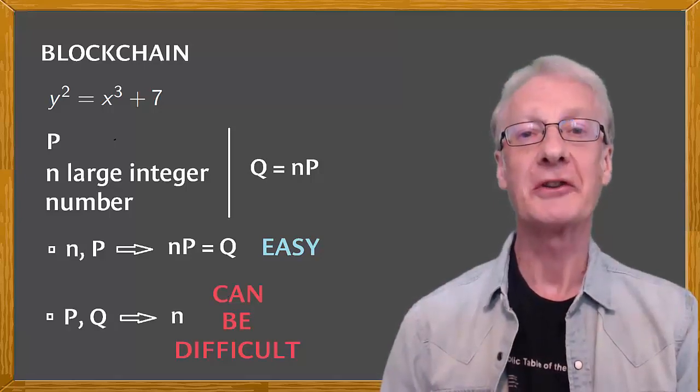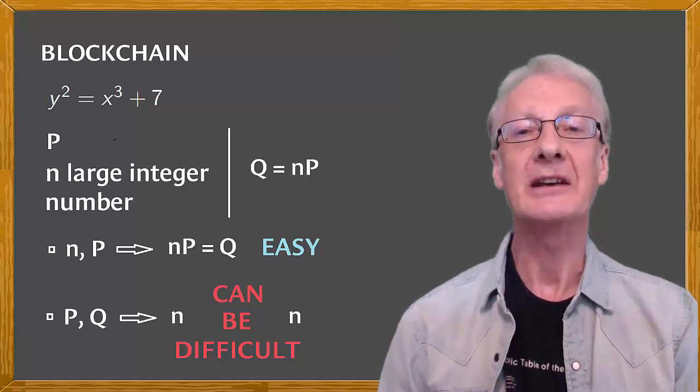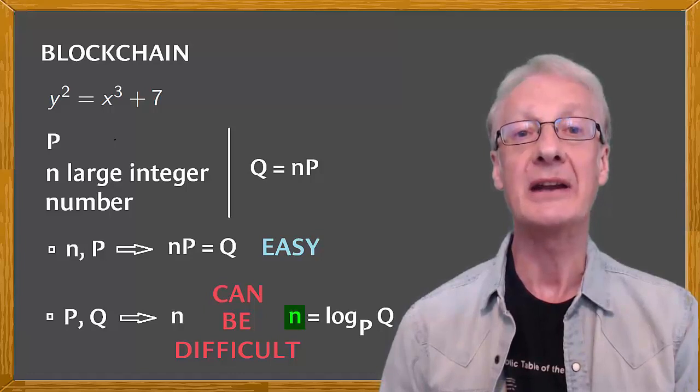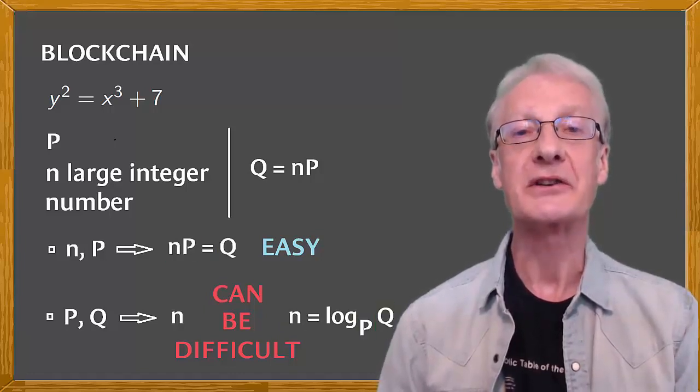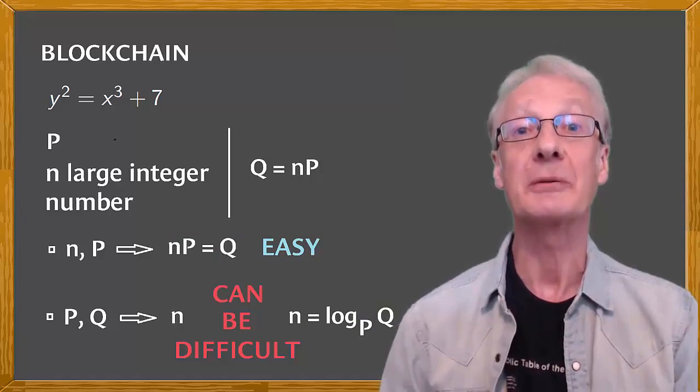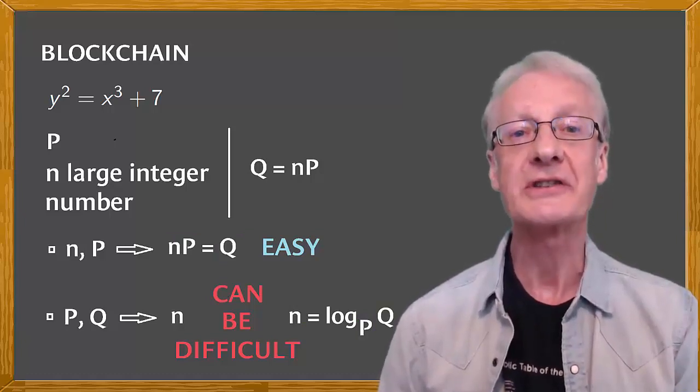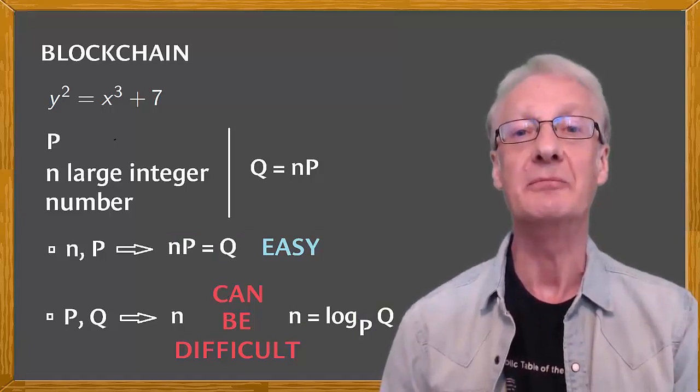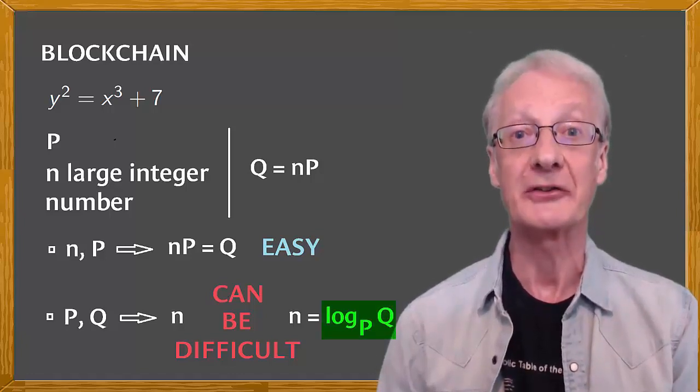Similar to the logarithms you know, n is the logarithm to base P of Q. The integer number n such that nP equals Q. The security of elliptic curve cryptography is a consequence of the difficulty of computing discrete logarithms like this.